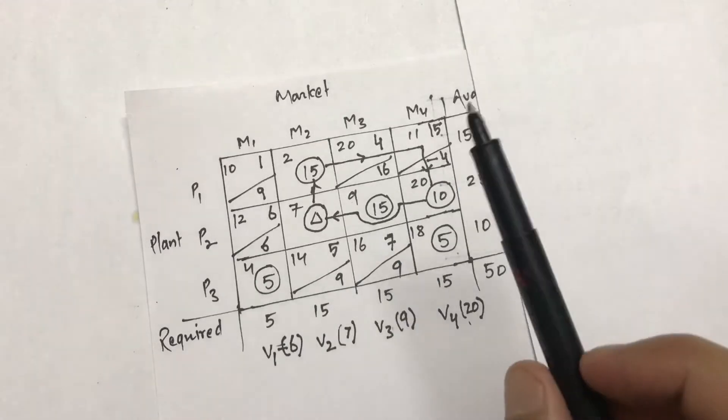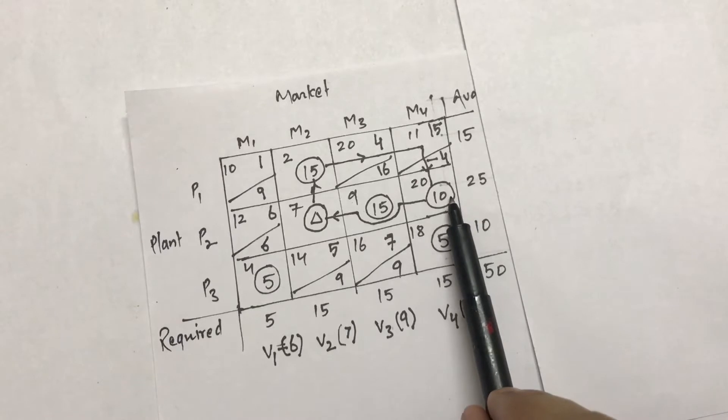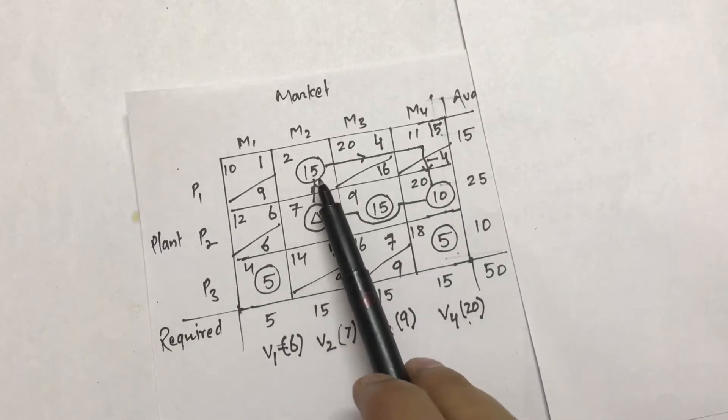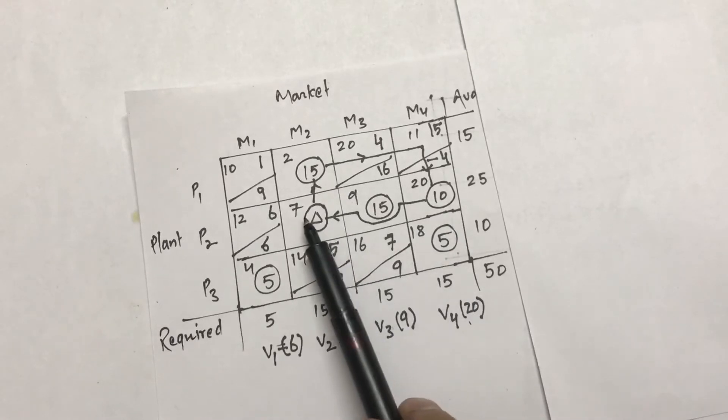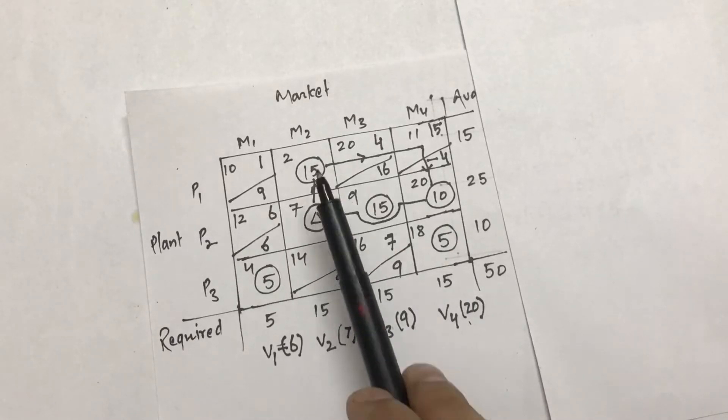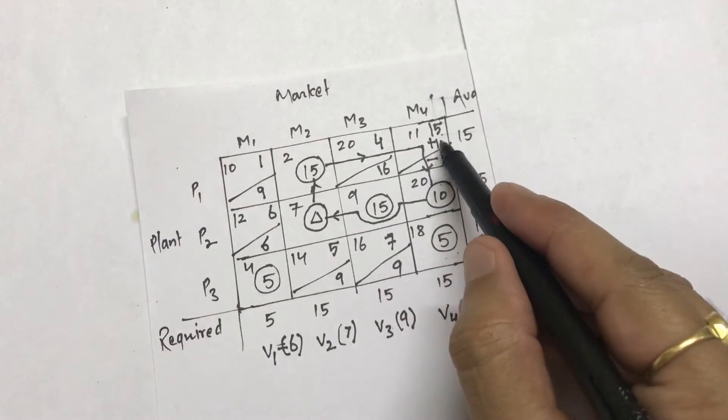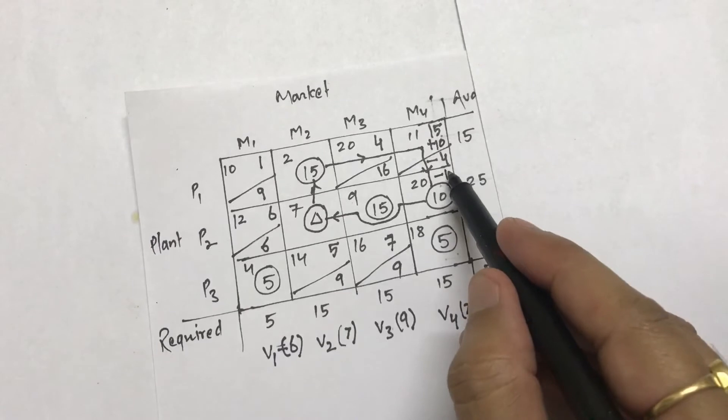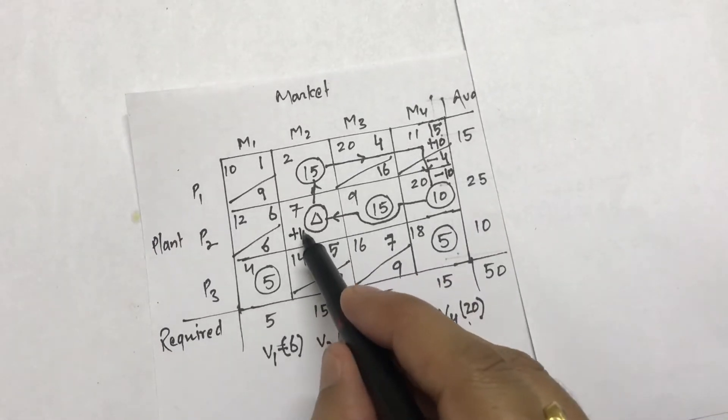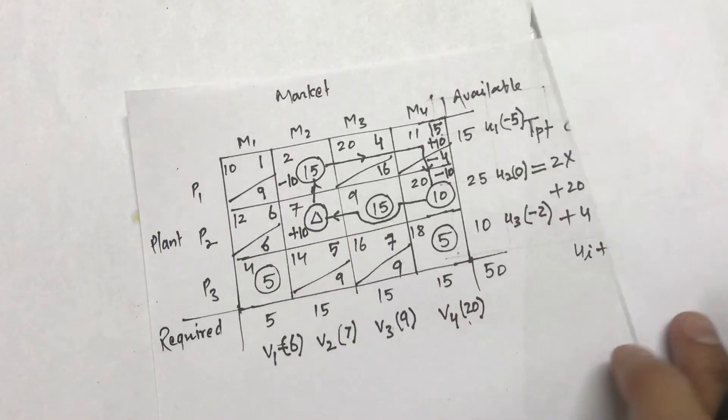After forming this particular loop, I have to see what are the allocations on the edges of this loop. The allocations are 10, Delta which is nearly equal to 0, and 15. Out of these three, Delta is an artificial allocation so I will not be considering it. Out of these two, the minimum is 10. So this 10 should be added here, then moving clockwise it should be removed from here and added here, and this should be removed from here.